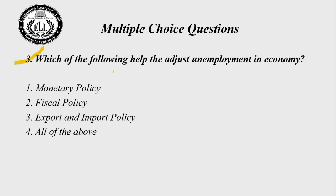Question 3: Which of the following helps adjust unemployment in the economy? Choice 1 — monetary policy; Choice 2 — fiscal policy; Choice 3 — export and import policy; Choice 4 — all of the above. The right answer is Choice 4: all of the above — monetary policy, fiscal policy, and export and import policy are all used to adjust unemployment rates.